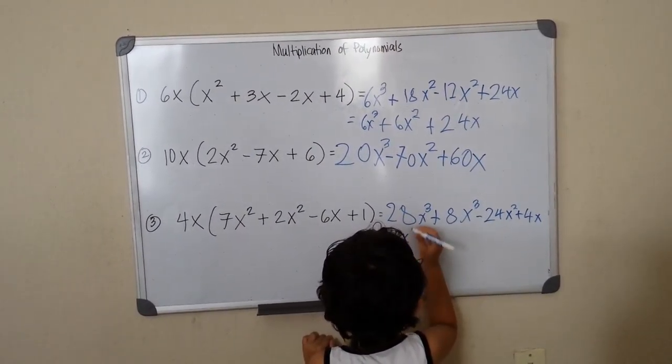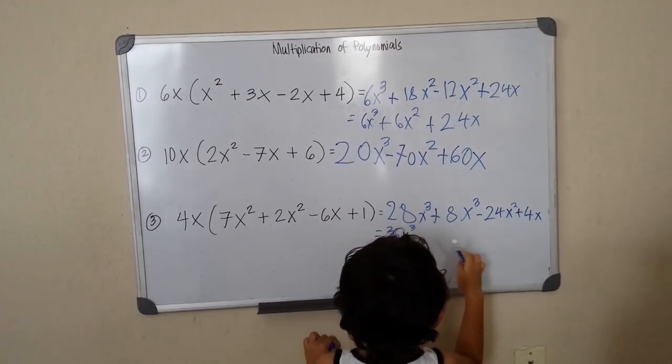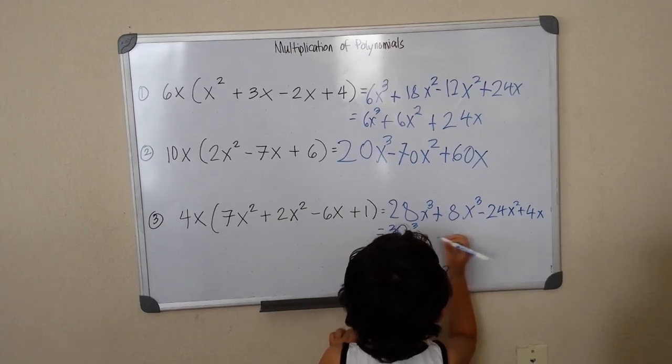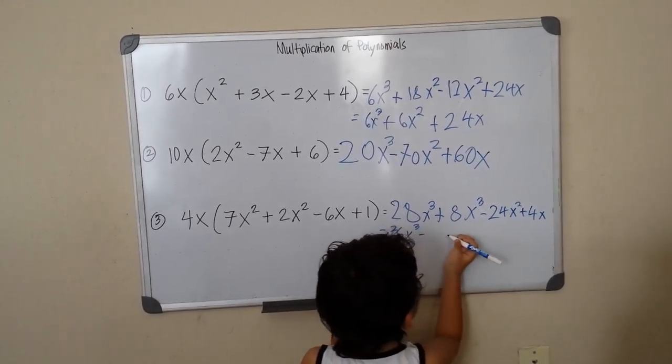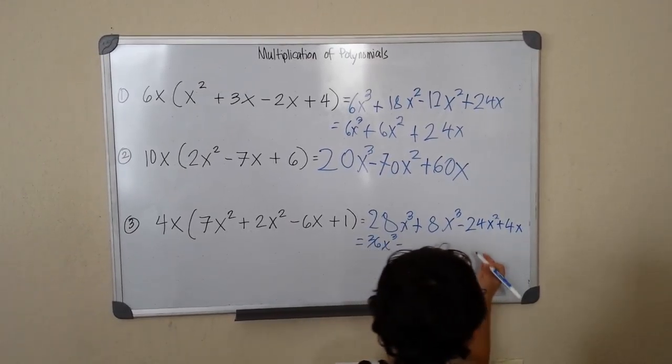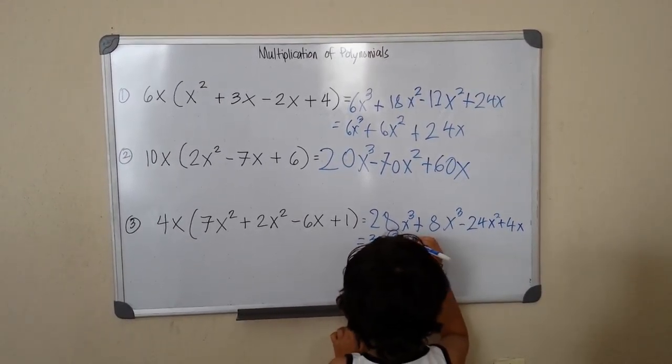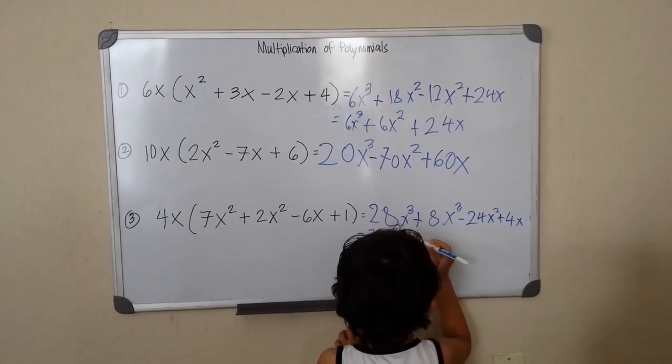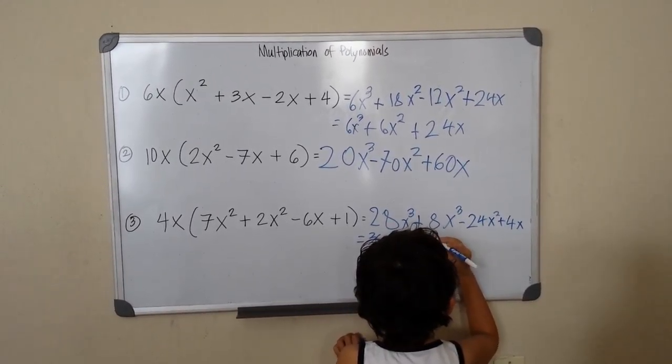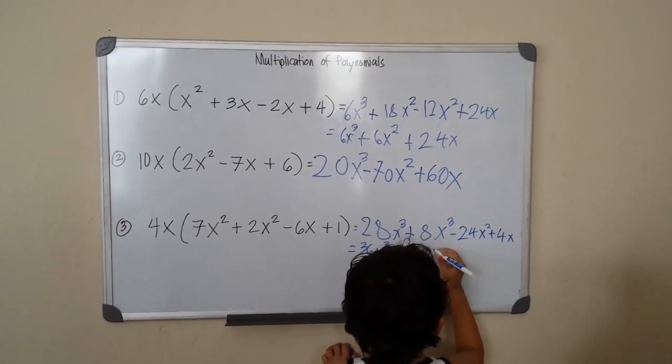36x cubed. Minus. That's minus. 24x squared plus 4x squared.